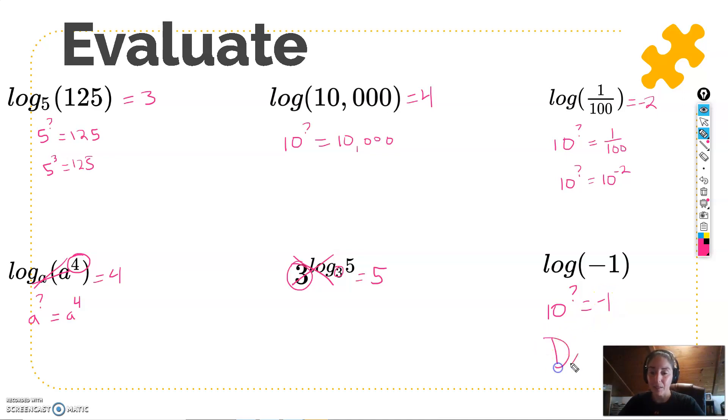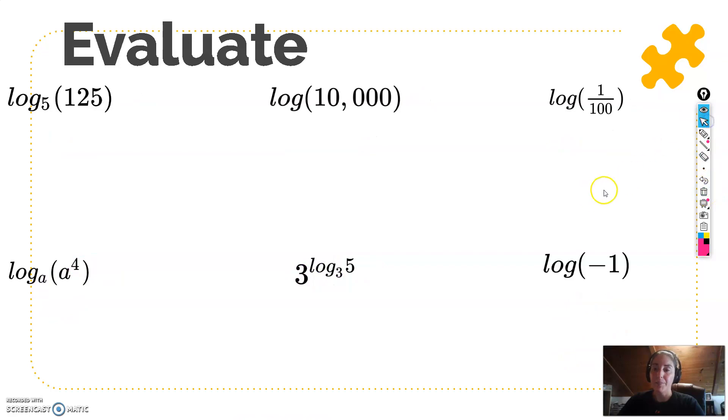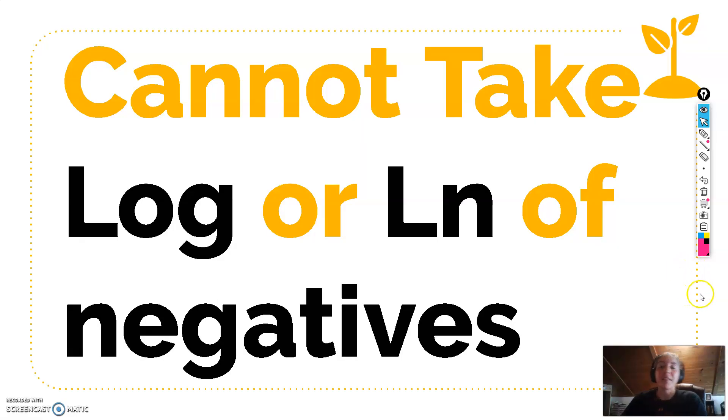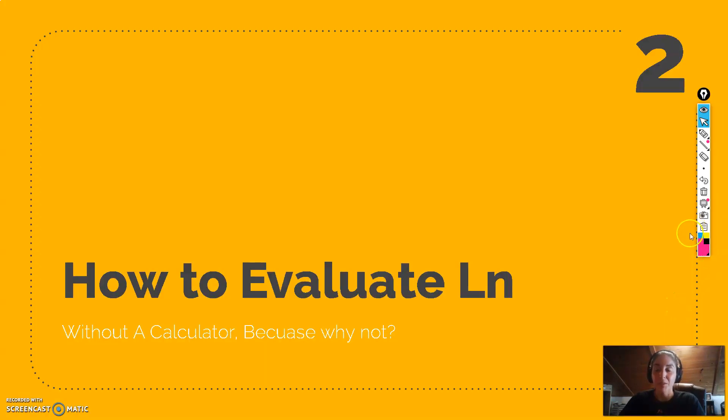So how do I ever get to negative numbers? Well, I can't. So that brings up a really big concept, which is we cannot take the log or ln of negatives. It's just not going to work because we can't get to negative. We can get to really teeny positives, but we can't ever go negative.